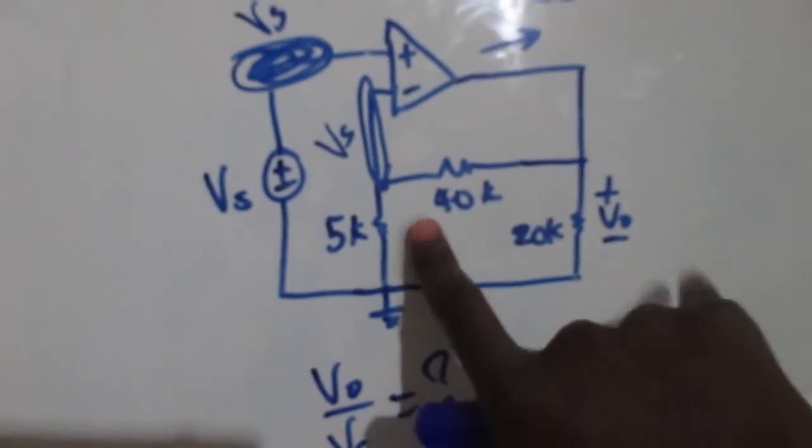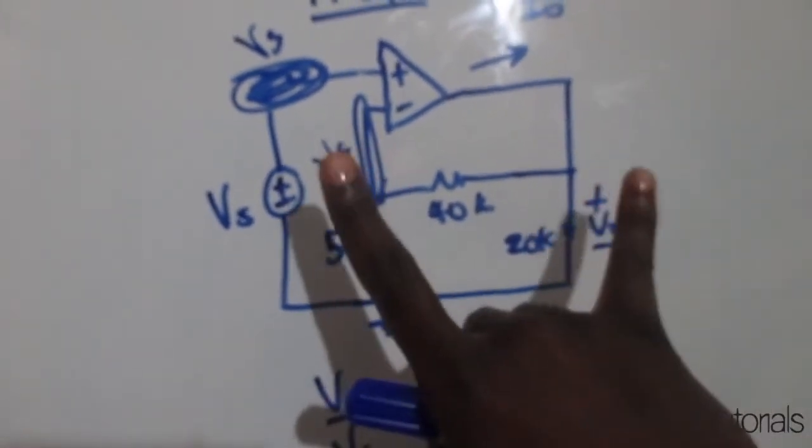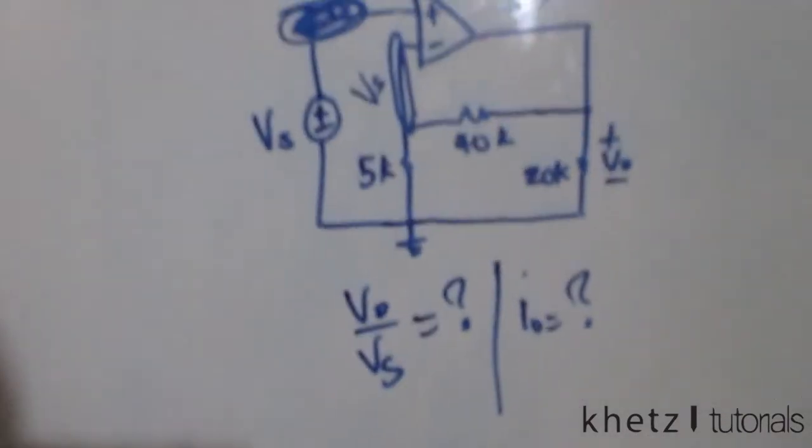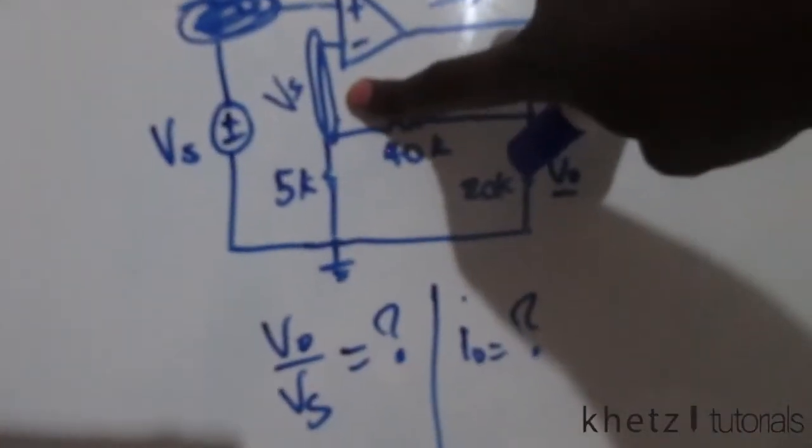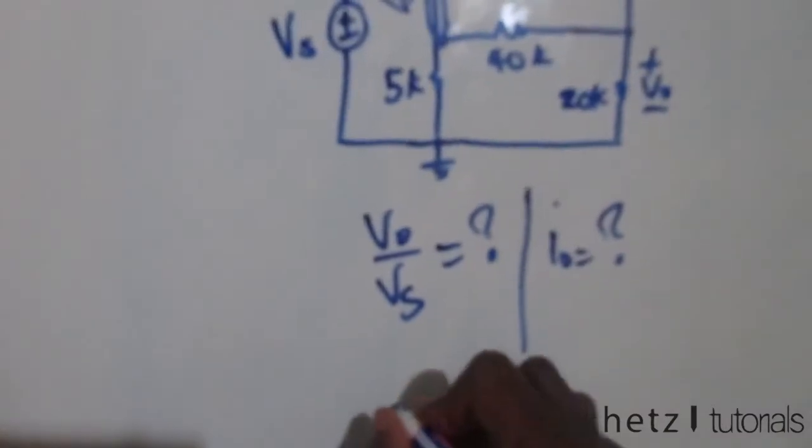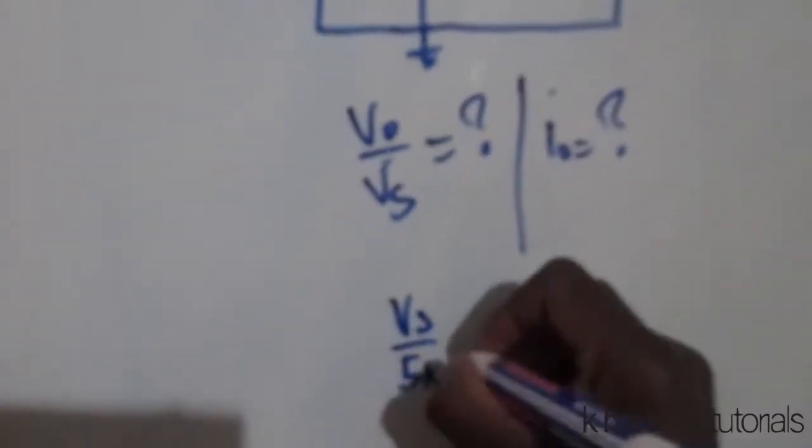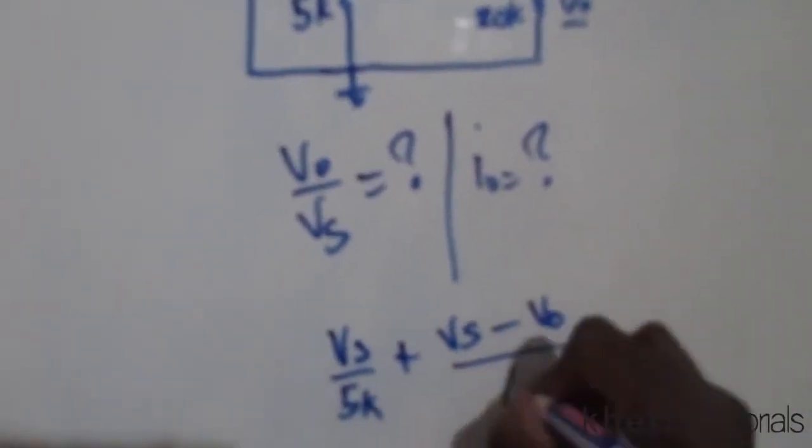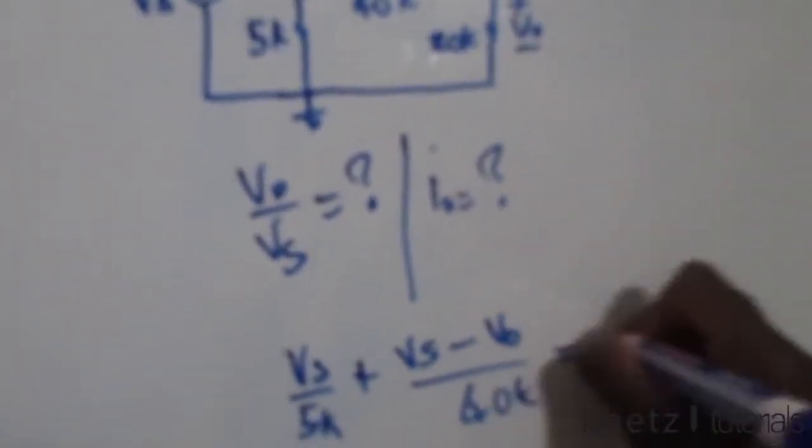Let's do that. Doing nodal analysis at vs, we're gonna have vs divided by 5k plus vs minus vo divided by 40k equals zero.